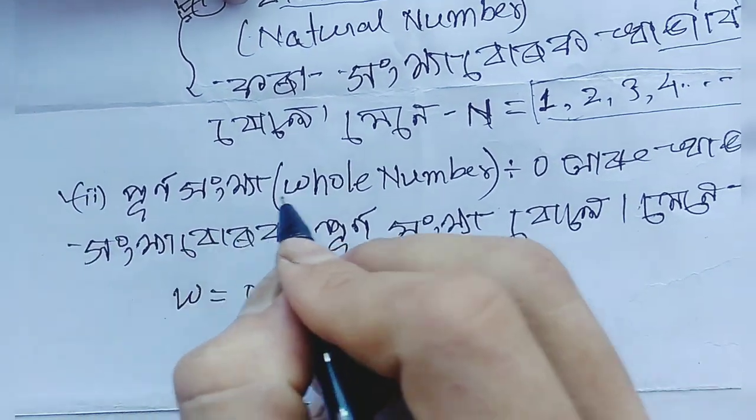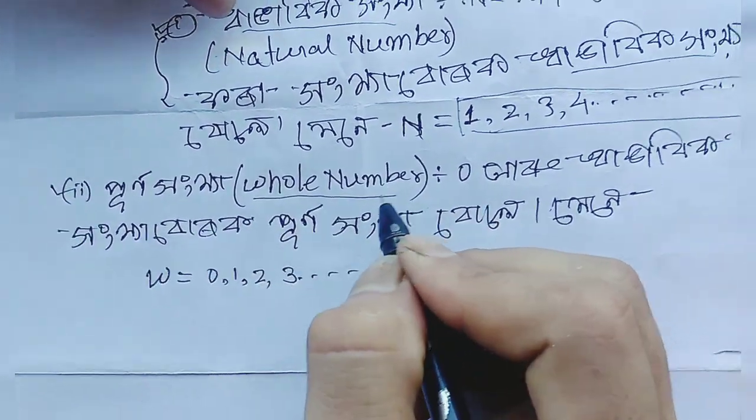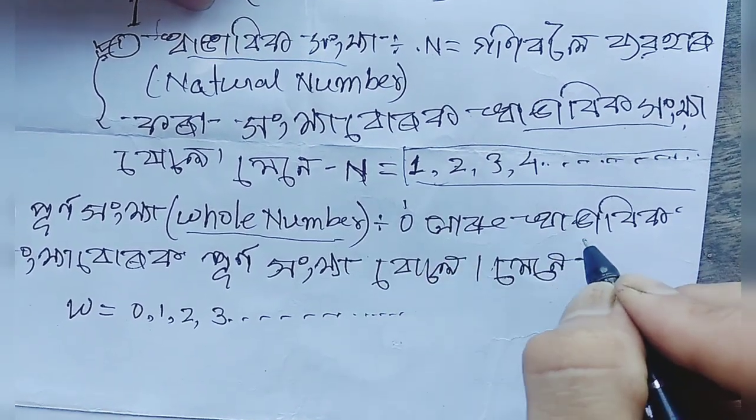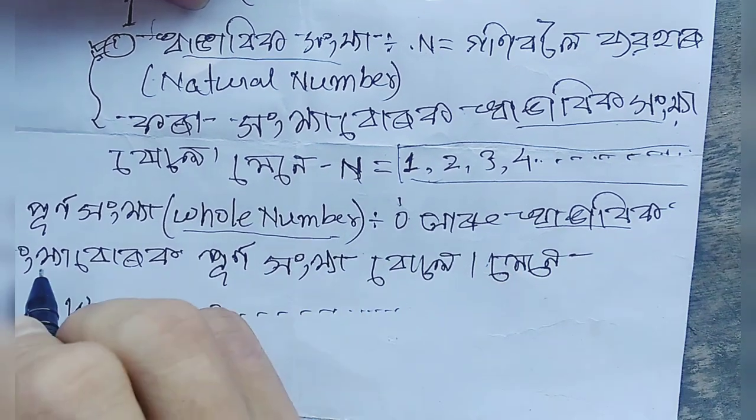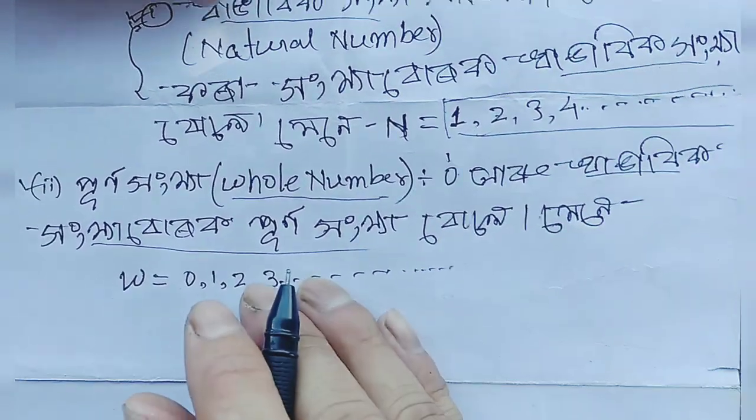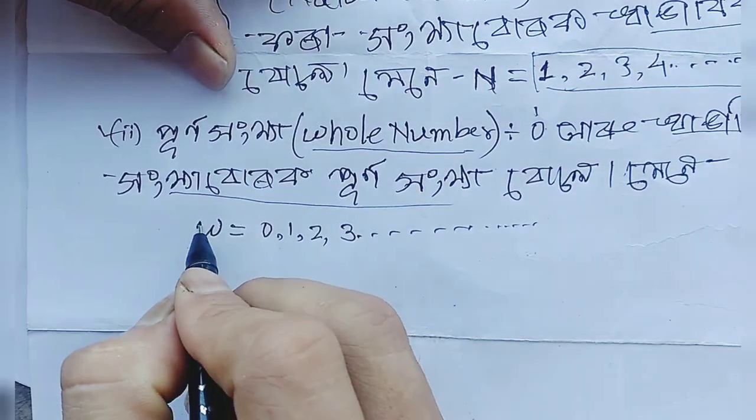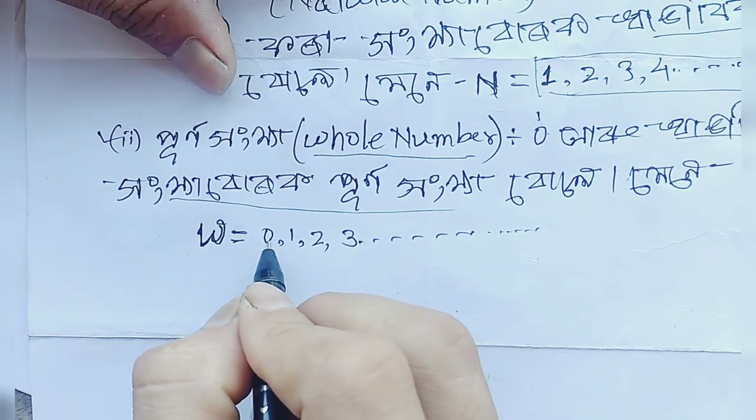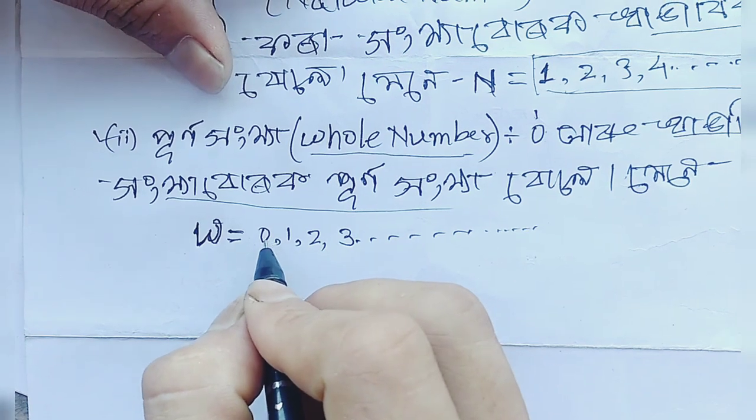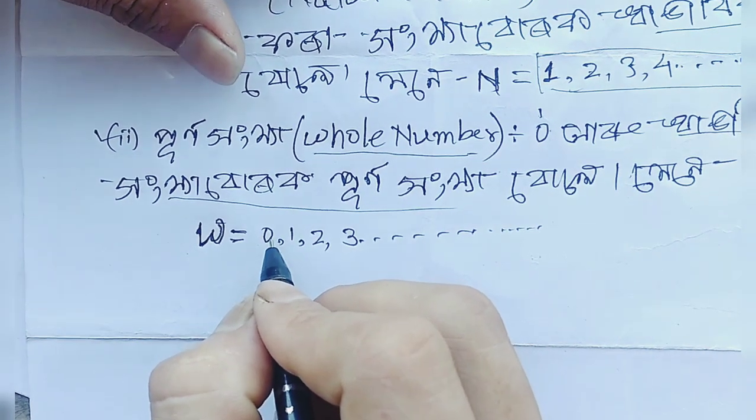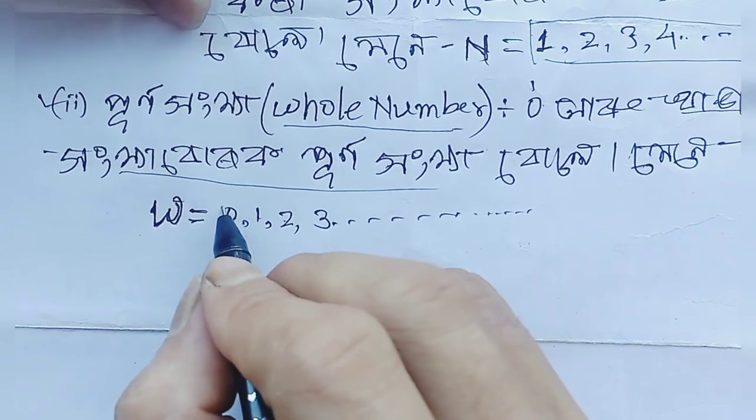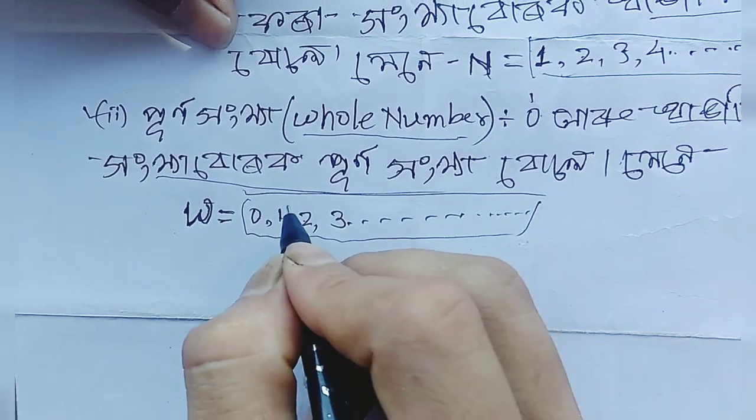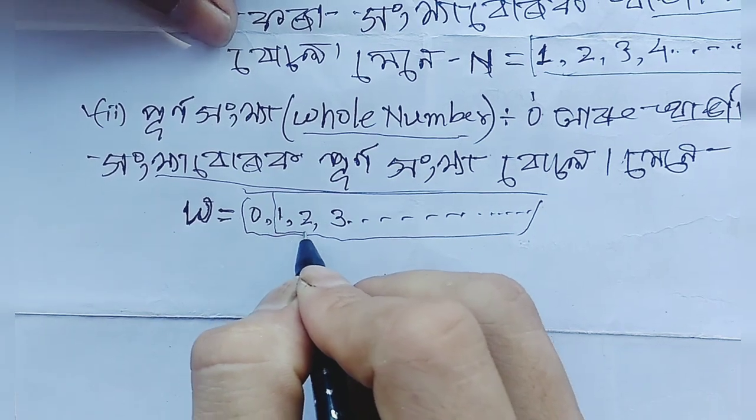Natural numbers include values like N = 1, 2, 3, 4, and so on. These are the natural numbers. The sequence starts with one, then two, then three.